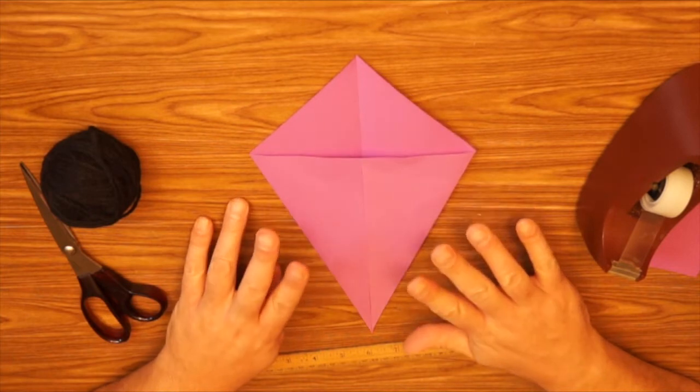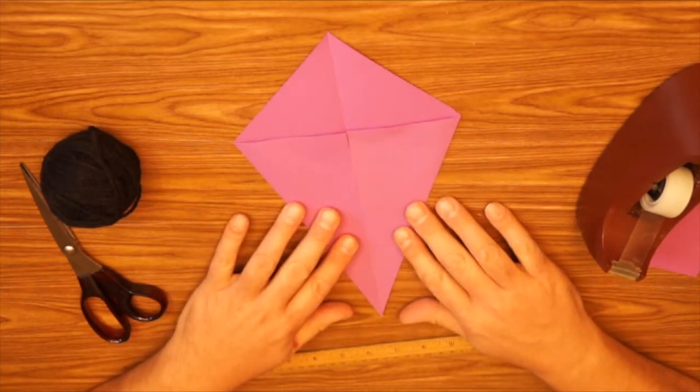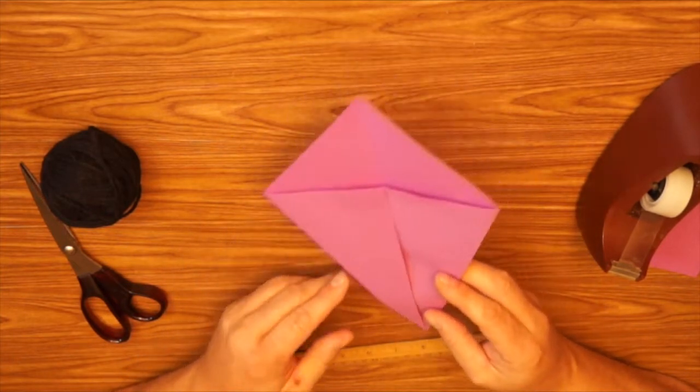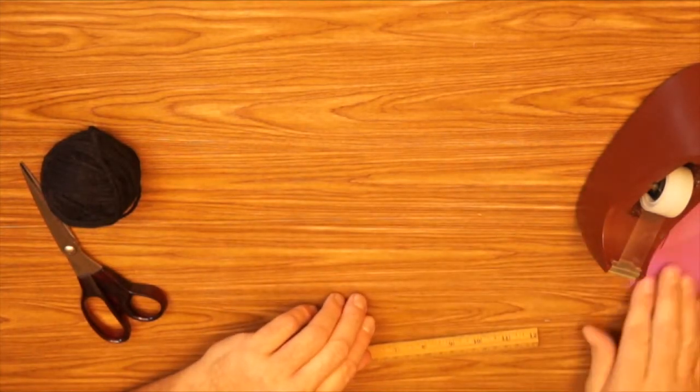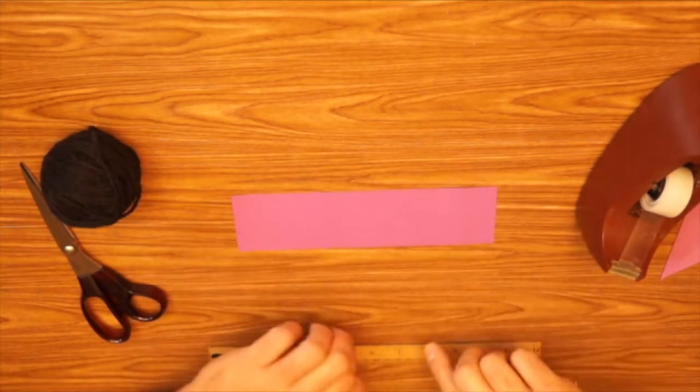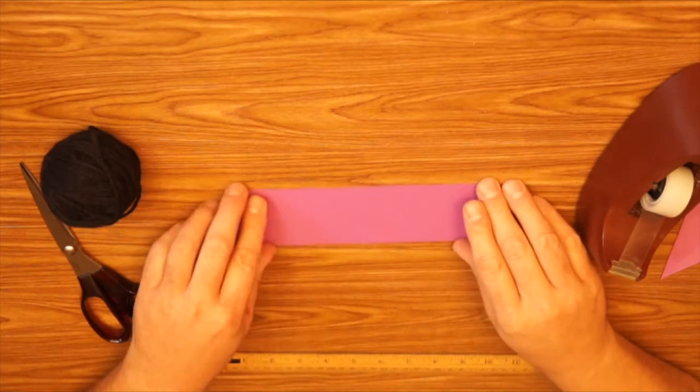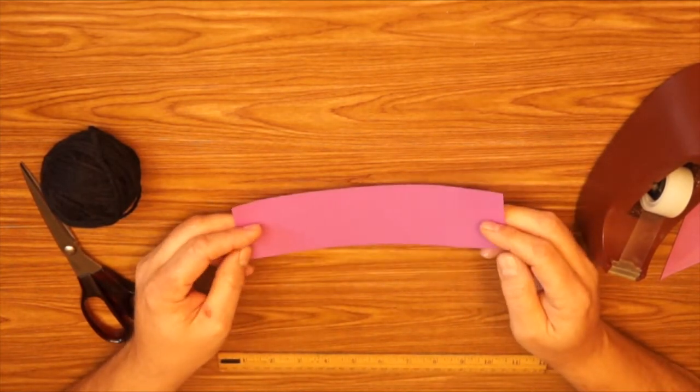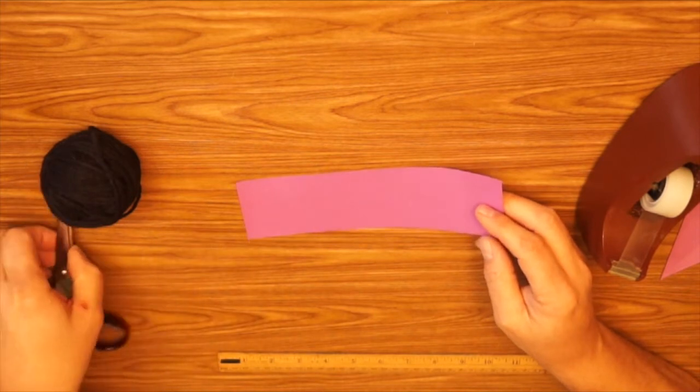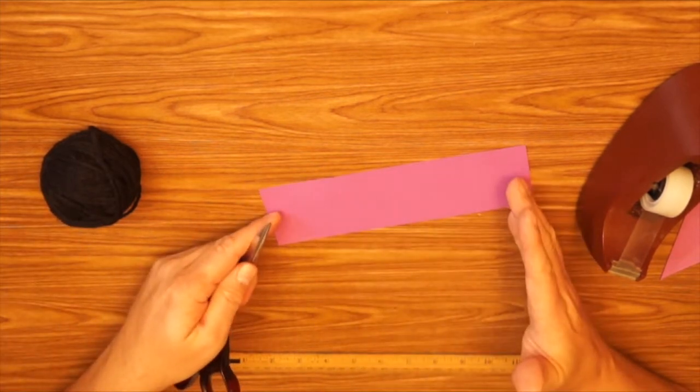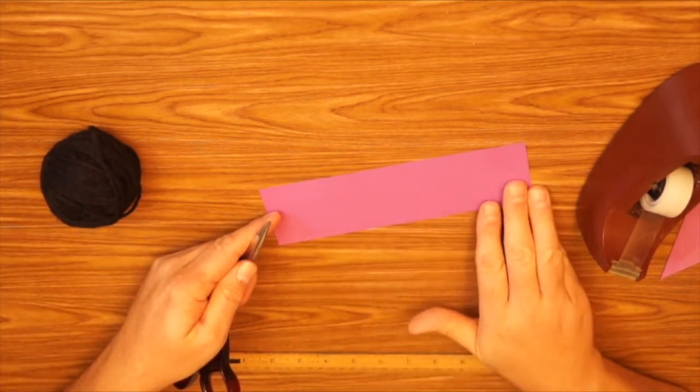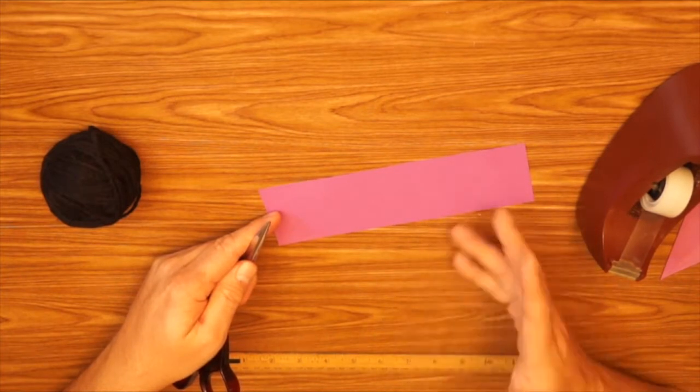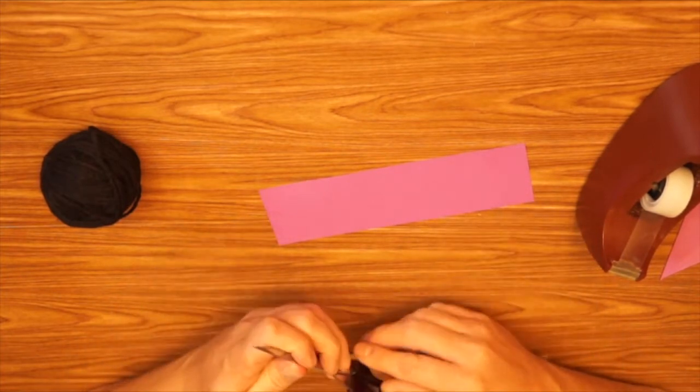Now, we're going to go ahead and make a tail for this kite. So I can set the kite aside for a minute. And I'm going to take the extra piece that I had when I made the square and I'm going to cut it into sections to make bows. Now, you could make as many bows as this paper will allow, which is going to be about eight, maybe a little more, a little less.